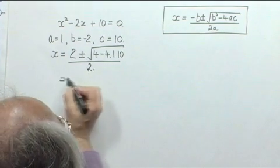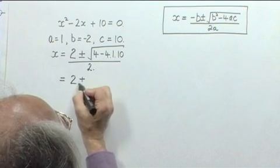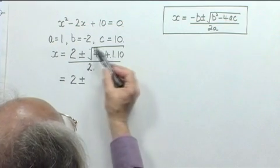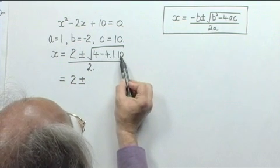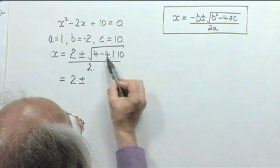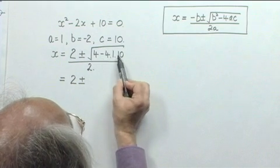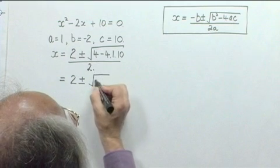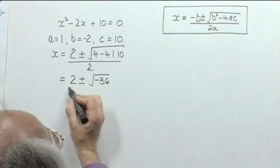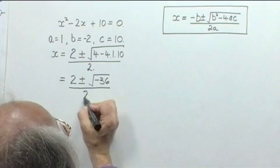Let's tidy this up. We've got 2 plus or minus. Now let's look under the square root sign. We've got 4 subtract 4 times 1 times 10. 4 times 1 times 10 is 40. 4 subtract 40 is minus 36. So you'll see we've got the square root of a negative number here, the square root of minus 36. And it's all divided by 2.